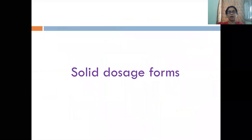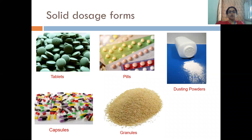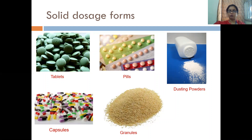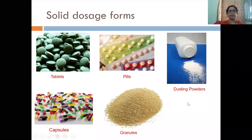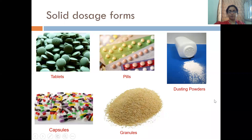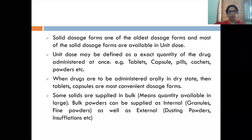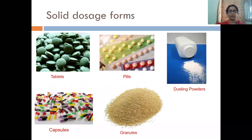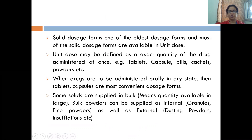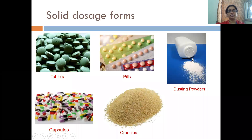Now we have done the first classification as per physical form. We are elaborating: first we have solid dosage form. In the solid dosage form we have tablets, capsules, pills, granules, and dusting powders. Solid dosage form is one of the oldest dosage forms and most are available in unit dose. Unit dose means single — one tablet is a unit dosage form. Dusting powder is not a unit — that is an example of bulk.